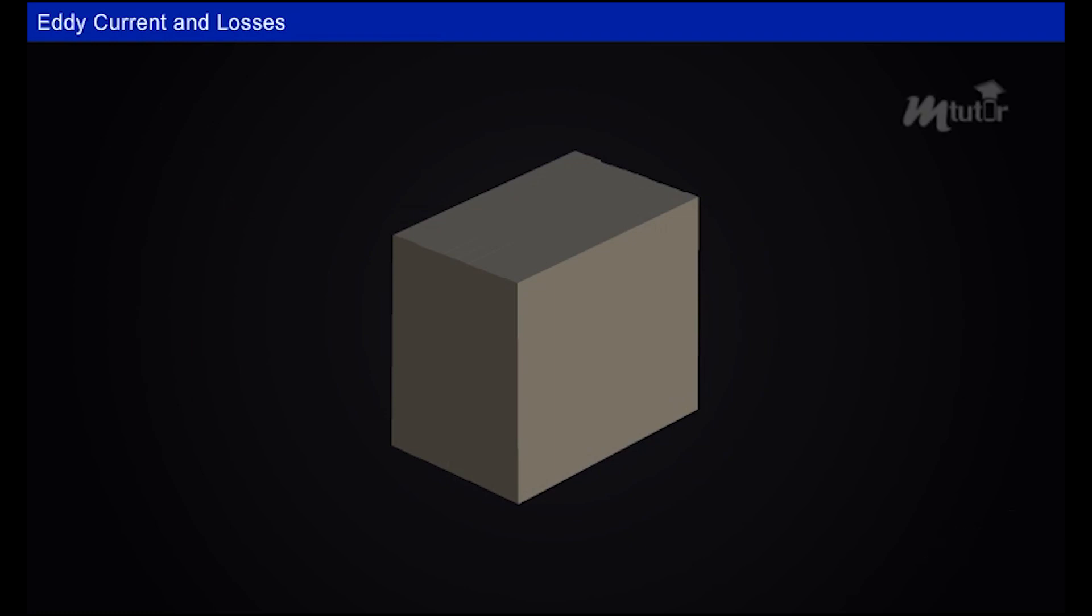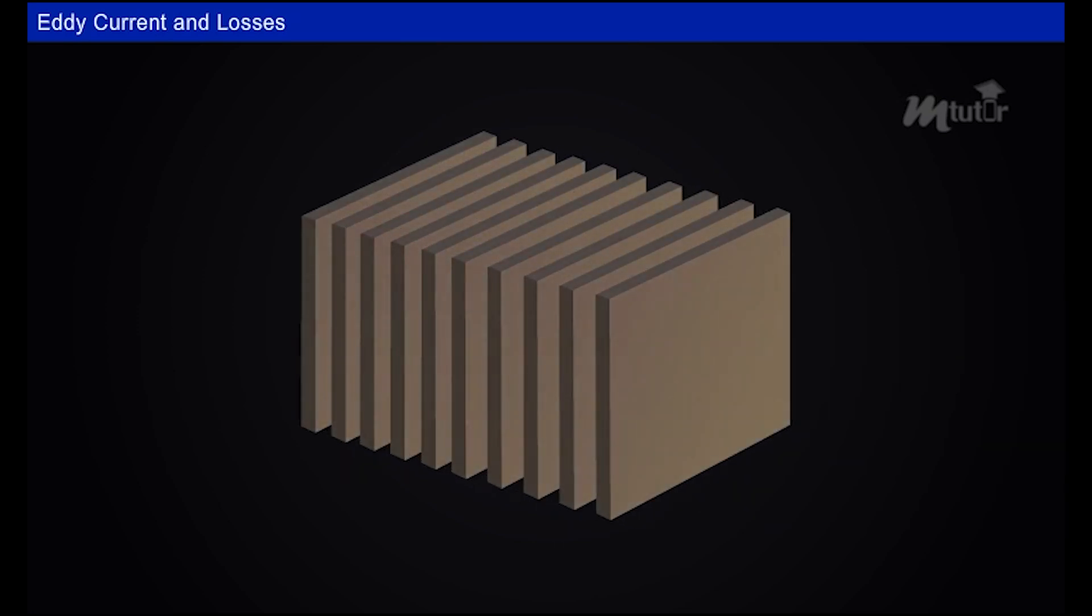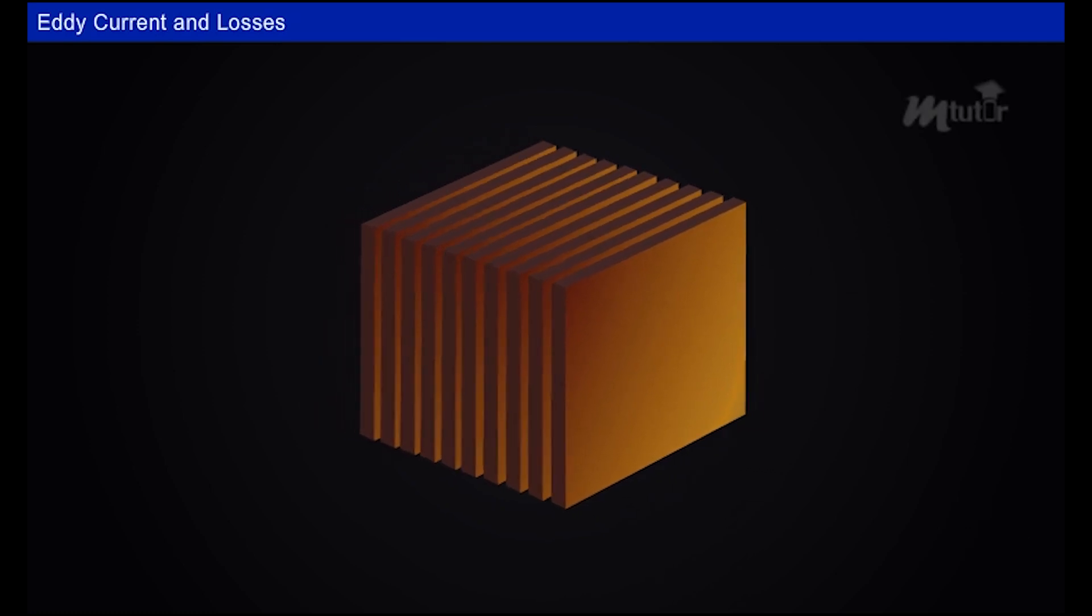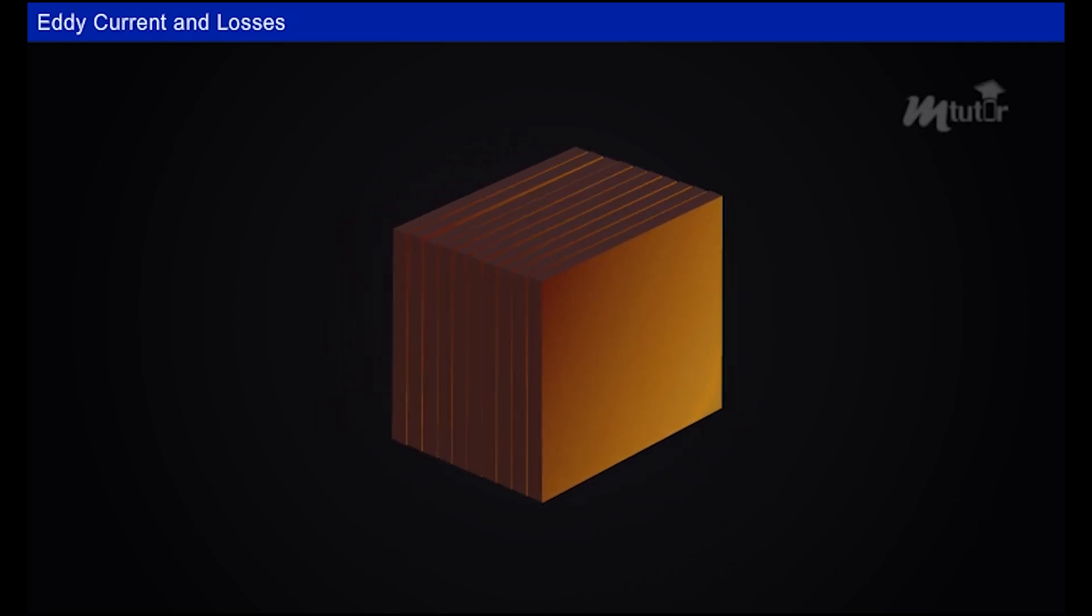For analysis purpose, let us consider a rectangular core instead of cylindrical core without loss of any generality. This can be achieved by using several thin, electrically insulated plates called laminations stacked together to form the core instead of a solid block of iron. These laminations are insulated from each other so that the eddy currents cannot circulate across the laminations. The shorter the distance between the laminations, the greater is the suppression of eddy currents.